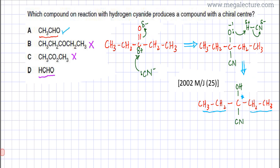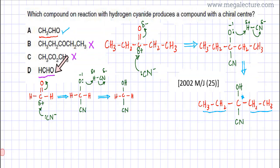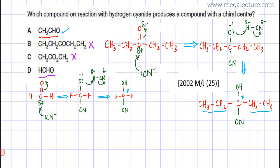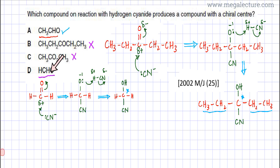Option D has the same issue as option B. The compound is methanal (HCHO), which does have a C=O group, so CN⁻ does attach to the carbonyl carbon and the final product forms. However, this carbon is not chiral because it is bonded to two hydrogen atoms — not four different groups. So although option D reacts with HCN, it does not form a chiral compound. Options B and D react but don't form a chiral compound; option C simply doesn't react. Only option A reacts and forms a chiral compound.